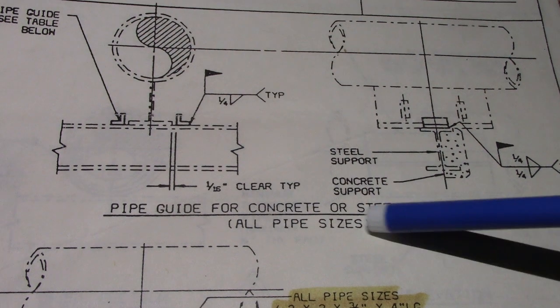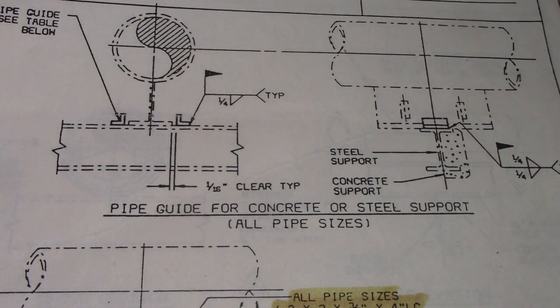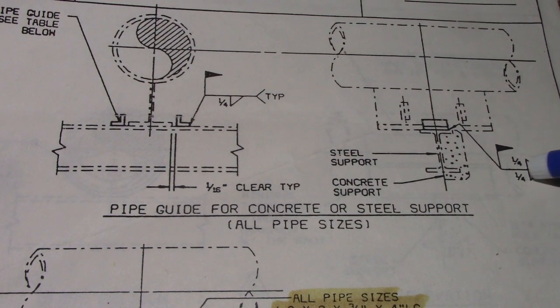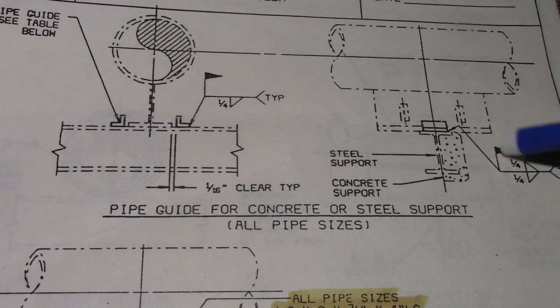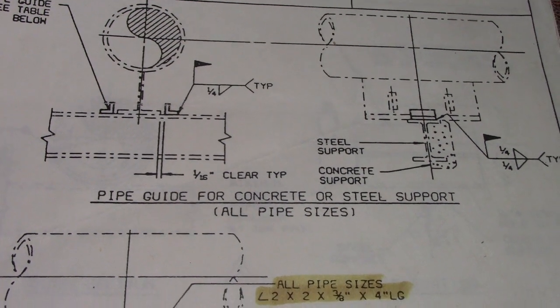This is the side view. Steel support, concrete support, and fillet weld symbols. This is both side symbols, fillet weld type also. And this pipe guide.